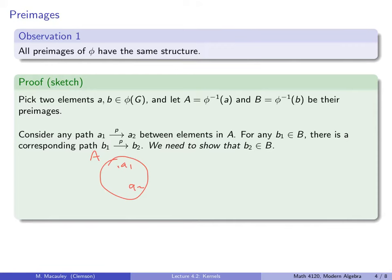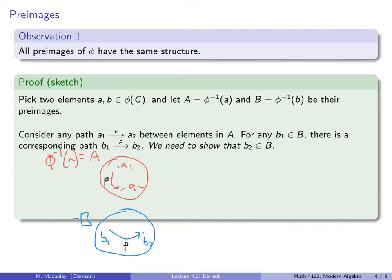So here is A, and here is A1, and here is A2, with a path going from A1 to A2. Now consider B down here — pick some B1 and follow the same path P. It doesn't need to be an edge; it could be a collection of edges. Our claim is that wherever that thing ends up — let's call it B2 — has to be in capital B. This is the preimage of A, and this is the preimage of B. What this would show us is that for any little piece of the Cayley diagram in A, there's a corresponding piece in B.